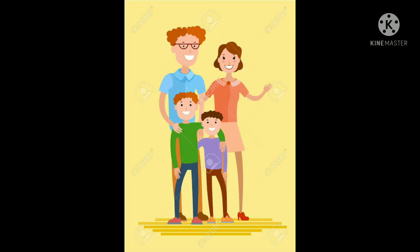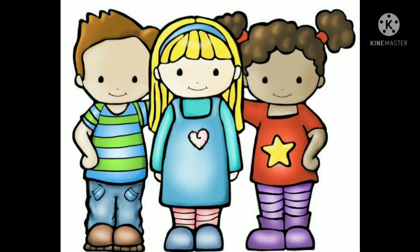A family is a group of people who are related to each other, such as mother, father, and their children. We all know that families are classified into different types based on the number of members. Now we are going to see three different types of family through a story about Roshan, Neha, and Tanya — three characters who live in the same area.